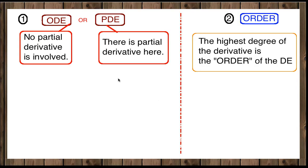Classification 1 is whether it is an ordinary differential equation or a partial differential equation. How can we distinguish these two? If there is a partial derivative in the equation, then it is a partial differential equation. If there is no partial derivative, then it is an ordinary differential equation.